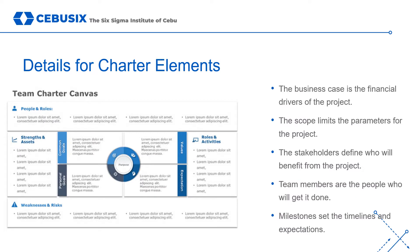There are several important elements that should be included in a team charter. There is the business case, which is the financial drivers of the project. The scope limits the parameters for the project, and the stakeholders define who will benefit from the project. The team members are the people who will get it done, while the milestones set the timelines and expectations. We will discuss these individual elements in greater detail over the next few slides.